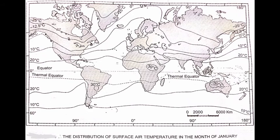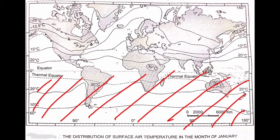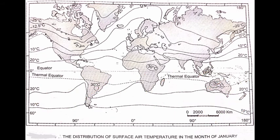We will now understand the distribution of surface air temperature in January in the southern hemisphere. In January, the sun rays are vertical over the Tropic of Capricorn, which is why it is warm — summer season in the southern hemisphere. The temperature is high over the land masses, rising over 30 degrees Celsius in four areas: North-West Argentina,